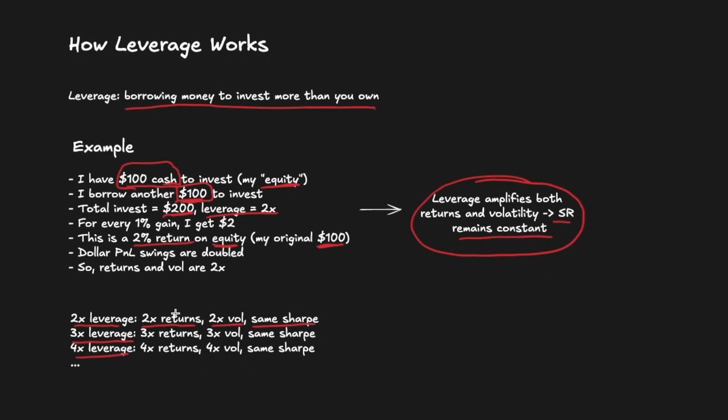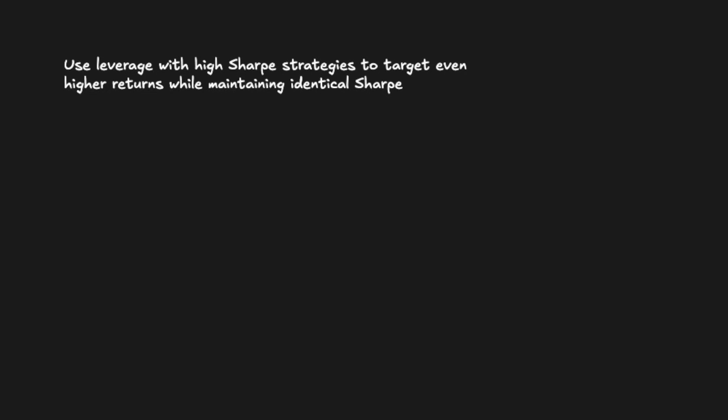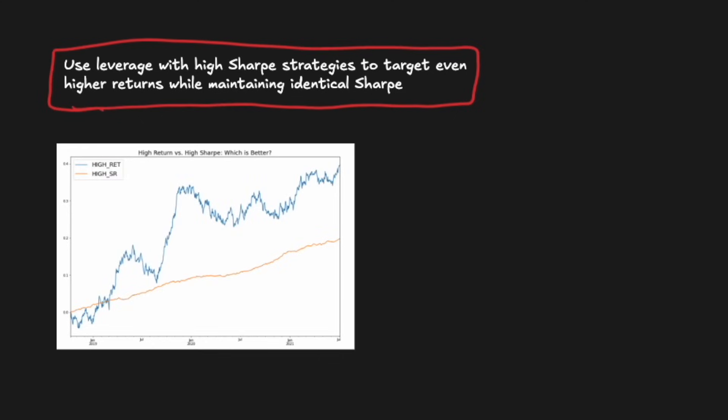All right, so given this result around leverage, how do we actually use it? This is the key takeaway: you can use leverage with high Sharpe strategies to target even higher returns while maintaining the identical Sharpe. And this is going to be why, in many cases, high Sharpe strategies are better than lower Sharpe strategies, even if the lower Sharpe strategy had somewhat higher returns. Because you can simply just lever up the higher Sharpe strategy to obtain higher returns and maintain the same high Sharpe.